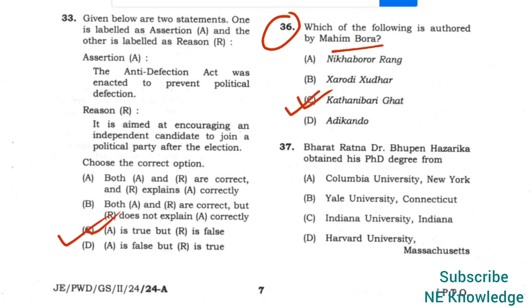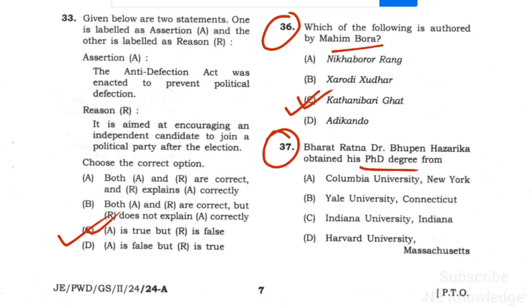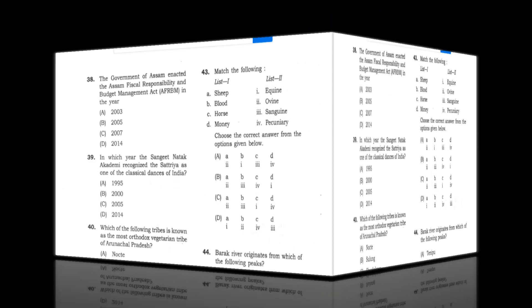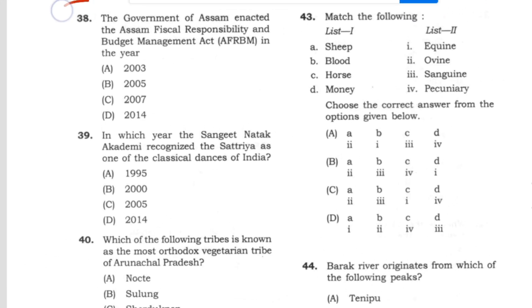Question number 37: Dr. Bhupen Hazarika obtained his PhD degree from Columbia University, New York. Answer: option A.